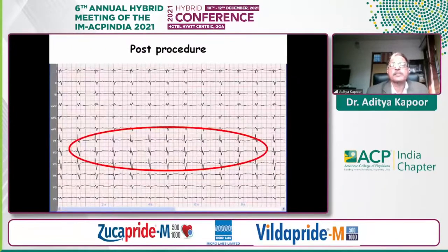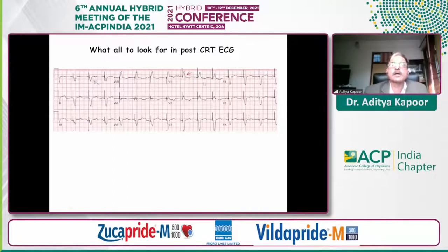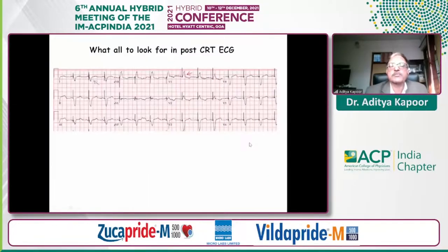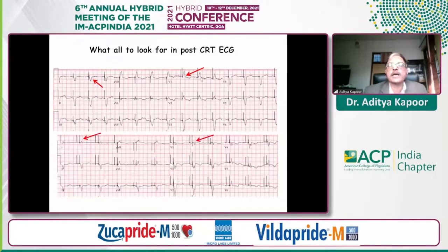Sometimes patients come with a pacemaker or CRT device for heart failure. These cardiac resynchronization therapy devices have three leads in the right ventricle, right atrium, and coronary sinus. When the patient asks whether their ECG is normal: since we are pacing from the coronary sinus or left ventricle, a correctly placed device produces a prominent R in V1 and a QS pattern in lead I. Whenever there is a problem with the device, you will not have this dominant R, or you will see a small RS pattern in lead I and a dominant R in lead I. Just from the ECG, you can diagnose whether the device is working correctly.